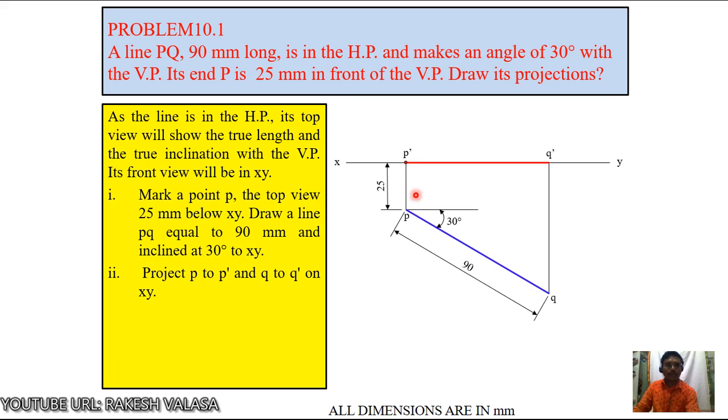If this line is having some above distance, you can see the same view, this front view above the XY. But in the question, that is not mentioned. The line is in the HP. So the front view lies or falls on XY only. This is the final front view and this is the final top view.